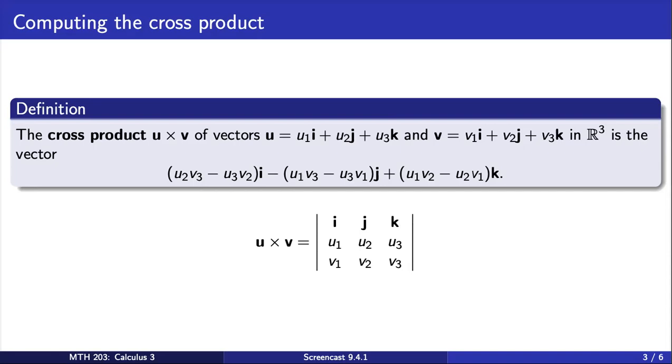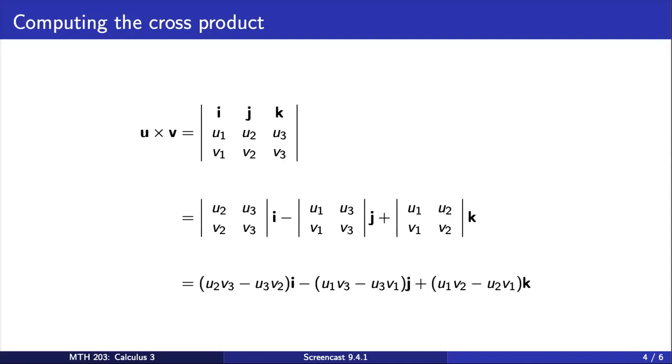Putting everything together, we can compute the cross product using these three expressions. To get the determinant of this 3×3 matrix, we start in the top left corner with the standard unit vector i. If we cross out the entries in the row and column containing i, we are left with a 2×2 matrix. This is the 2×2 matrix that appears on the next line multiplied with the standard unit vector i.